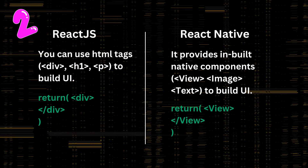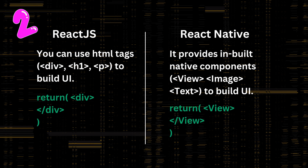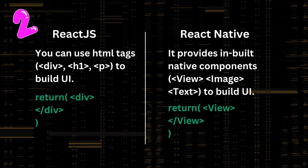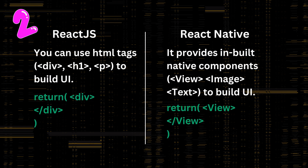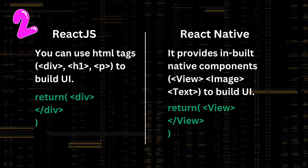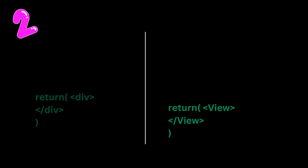Number 2: In React.js, you can use HTML tags like div, h1, p, etc. to build UI. In React Native, it provides built-in native components like View, Image, Text, etc. to build UI.